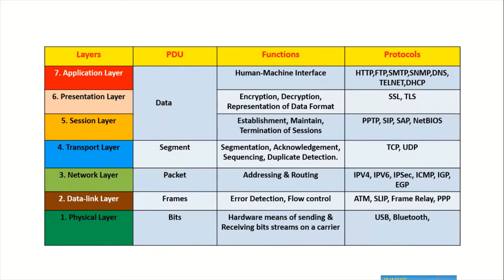At the network layer, segments are broken down further into packets, and these packets are encapsulated with IP addresses. The main functions of the network layer are addressing and routing. If you are here and the server is on another continent, the packet is routed to the right destination. Protocols used include IPv4, IPv6, IPsec, and ICMP.